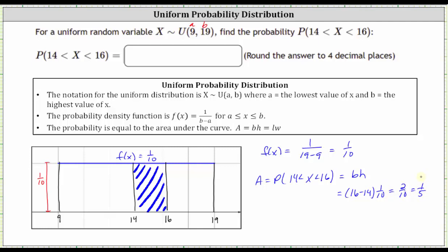But this question does want the answer as a decimal. 1/5 is equal to 0.2. But let's also verify this result by graphing this distribution using Desmos.